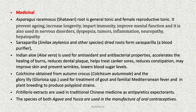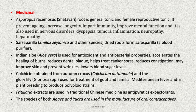Colchicine is obtained from the Autumn Crocus (Colchicum autumnale) — this is different from the saffron crocus. Gloriosa, the Glory Lily, is used for treatment of gout and familial Mediterranean fever, and in plant breeding it is used to produce polyploid strains. Fritillaria extracts are used in traditional Chinese medicine as antipyretics and expectorants. Species of both Agave and Yucca are used in the manufacture of oral contraceptives.